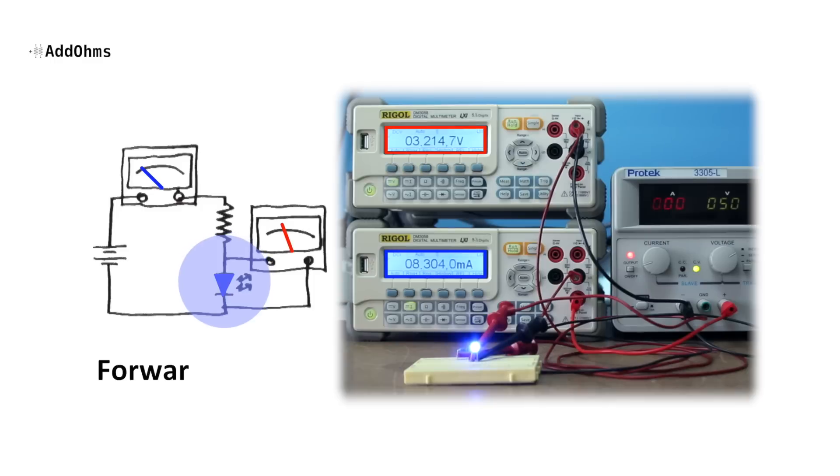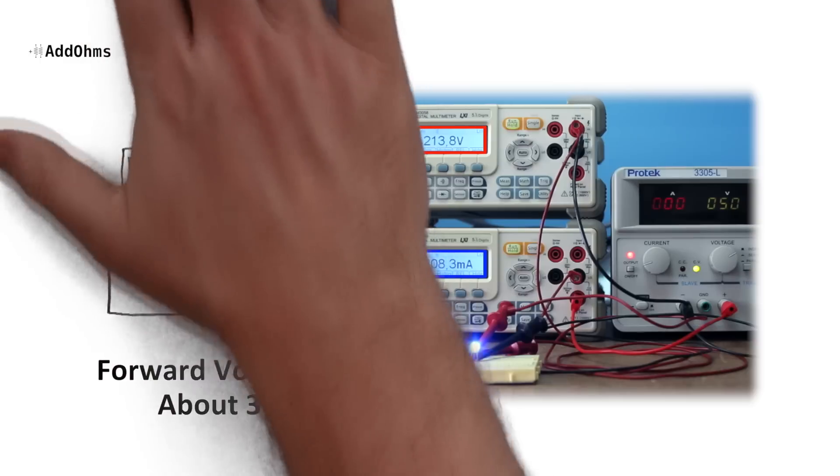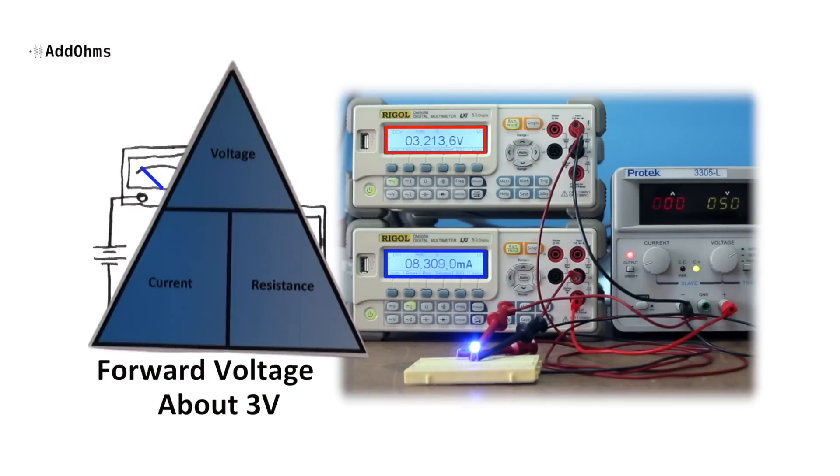Well, the LED is dropping its forward voltage of about 3 volts, while the resistor gets the rest of the supplied voltage. Ohm's law is taking over the circuit, and the resistor is acting as a current limiter for the LED.